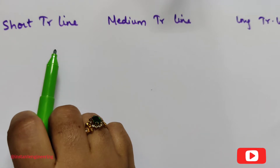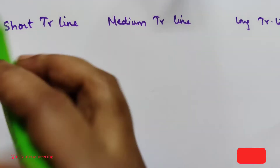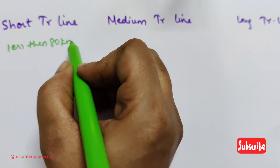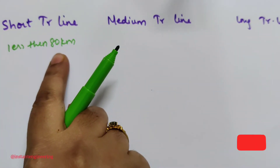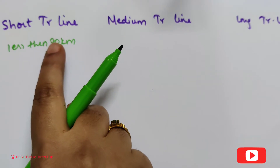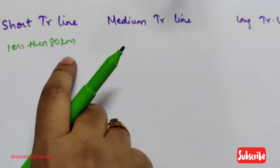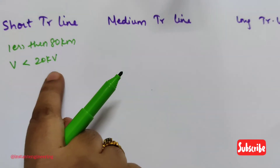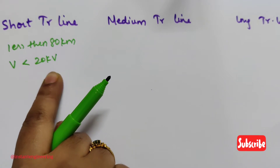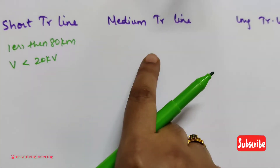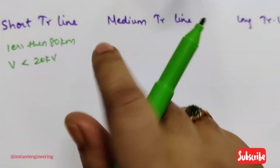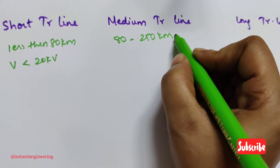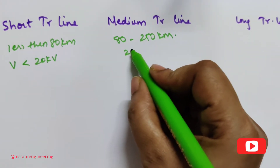A short transmission line is one where the length is less than 80 kilometers and the operating voltage is less than 20 kV. A medium transmission line has a distance ranging from 80 to 250 kilometers and an operating voltage between 20 to 100 kV.